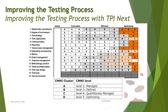Now, we come to the 16 key areas. This diagram also represents how you can use a combined approach of TPI Next with CMMI. The 16 key areas are highlighted on the left side, and the right side compares them to CMMI levels. However, combining TPI Next with CMMI is not in our syllabus, so we will concentrate on the left side – the 16 key areas themselves.